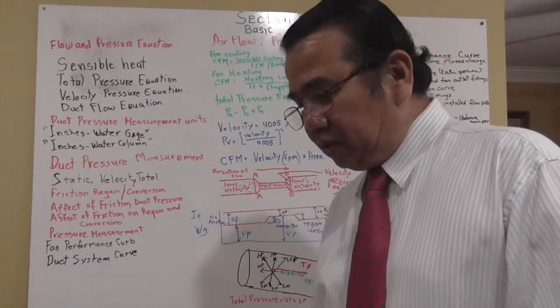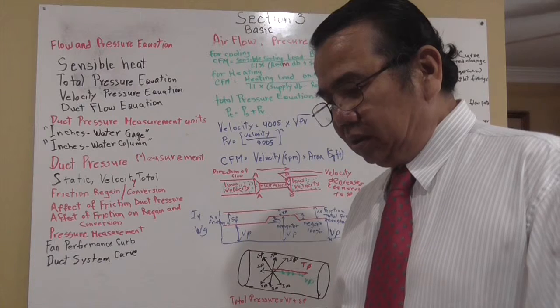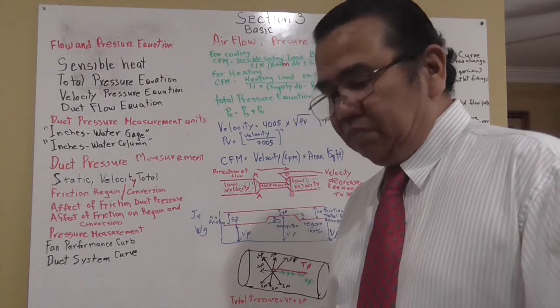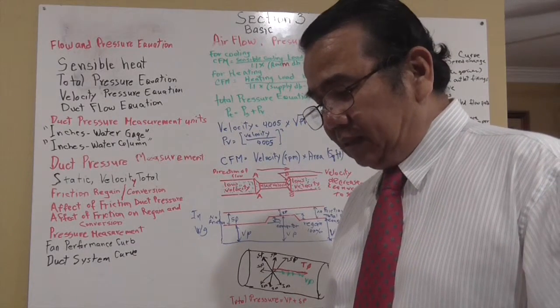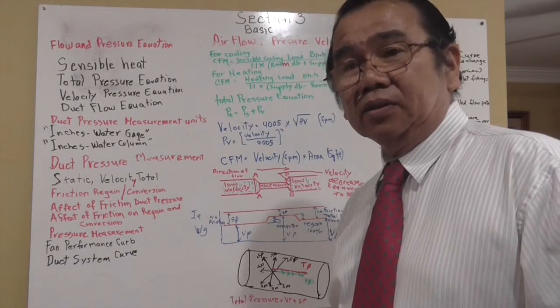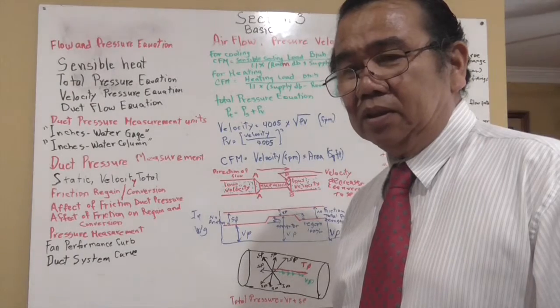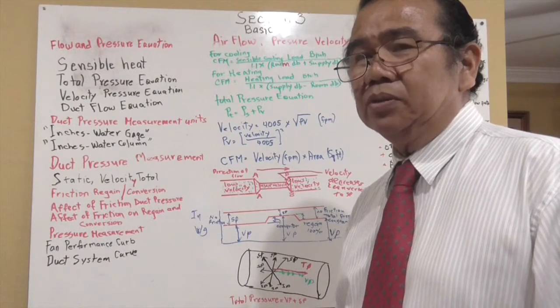For duct material, use the charts on the friction charts—roughness and correction factors must be considered. You can use the duct slide rule to consider the additional factors that you must put into your calculation.